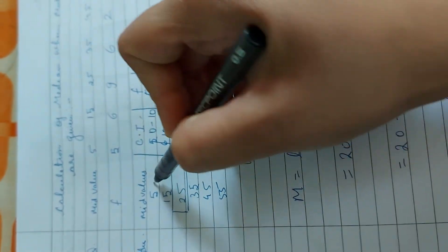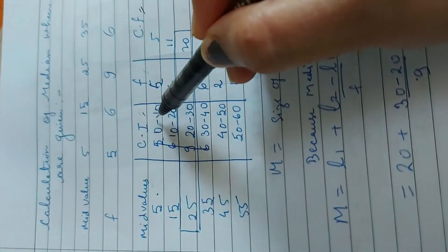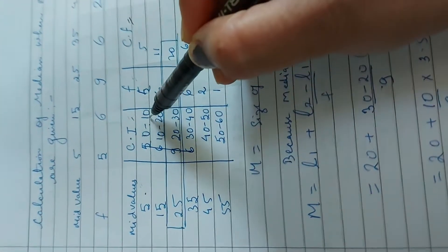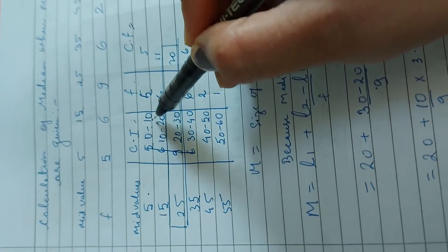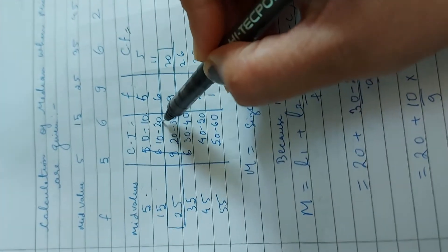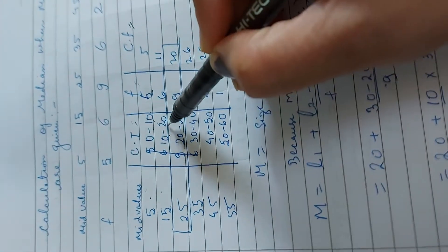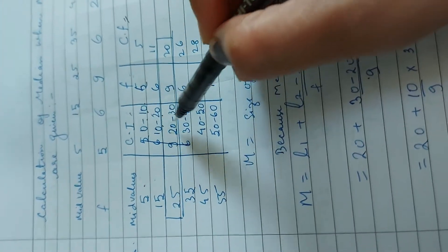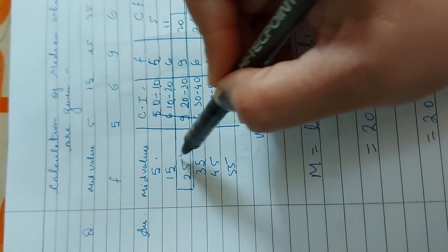When mid value is 5, it's obvious that your class interval will be 0 to 10. Then we will write 5, 15, then 20 plus 10 by 2 will be 15. So we will make class interval as mid value.